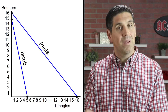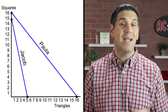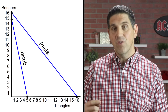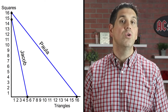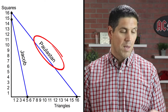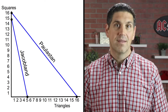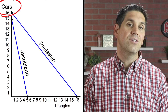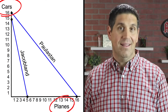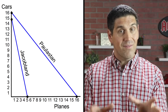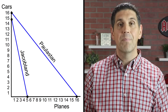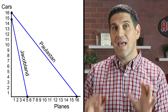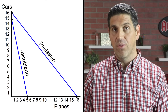Now let's convert this to something that makes more sense when we talk about trade. Instead of individuals, let's say we're two different countries: Polistan and Jacob Land. And instead of squares and triangles, let's convert those over to cars and planes. Notice that Polistan, given the same number of resources, can produce more cars and more planes — so they have an absolute advantage in both.